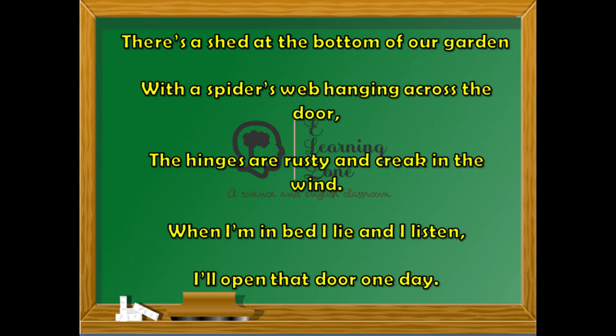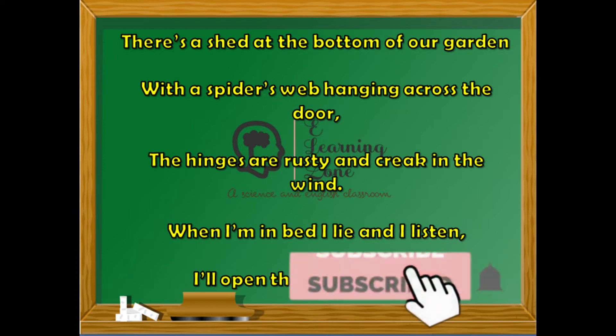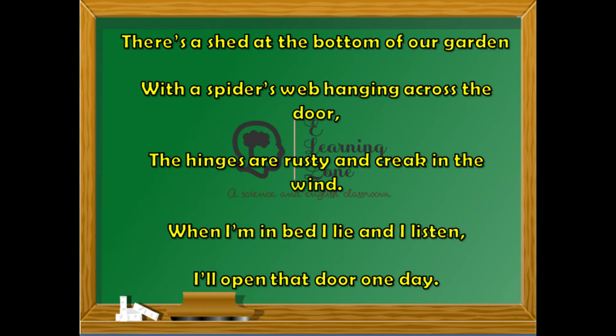Now let us start with the explanation of the poem. 'There's a shed at the bottom of our garden, with a spider's web hanging across the door. The hinges are rusty and creak in the wind. When I am in bed I lie and I listen. I'll open that door one day.'